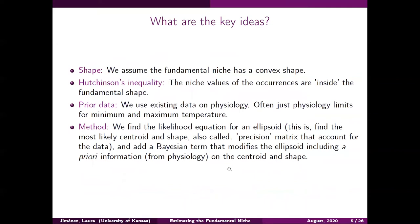The key ideas we are going to use are: the fundamental niche has a convex shape, in particular an ellipsoidal shape; we take into account that presence points come from the realized niche, which is contained within the fundamental niche, so we use presence data; and in cases where we have information from physiological experiments, we use the tolerance ranges — the minimum and maximum values for each environmental variable — to inform the model and combine physiological experiments with presence data.